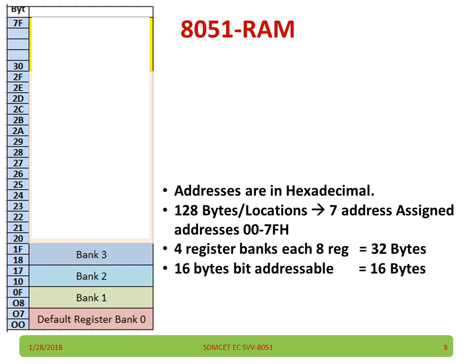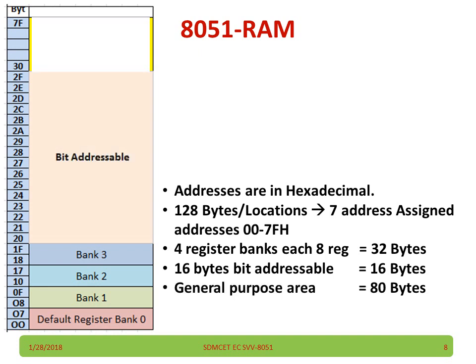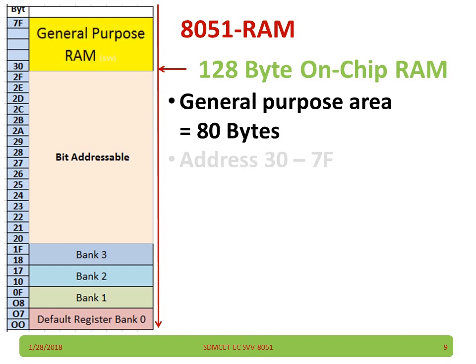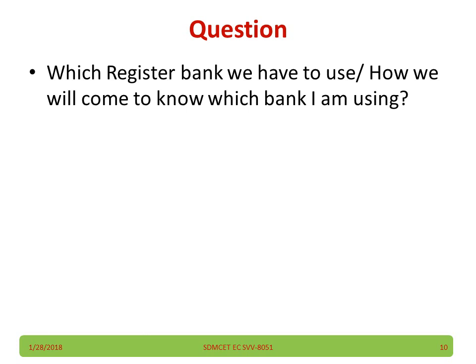So we have 4 register banks, 16 bytes of bit-addressable area we have discussed, and general purpose 80 bytes are there. The general purpose 80 bytes start from 30H to 7FH — a total of 80 bytes available. This is an area where you can use as a scratch pad or to store temporary data, and the address is 30H to 7FH.